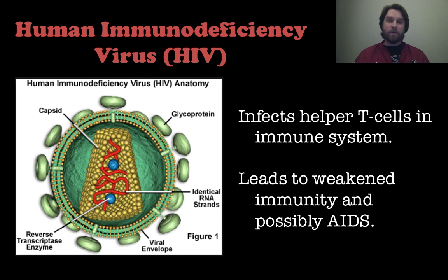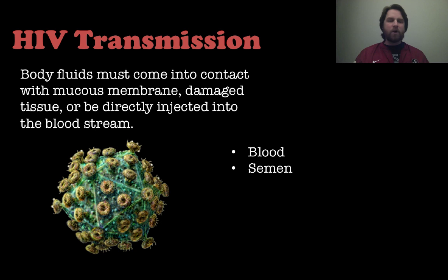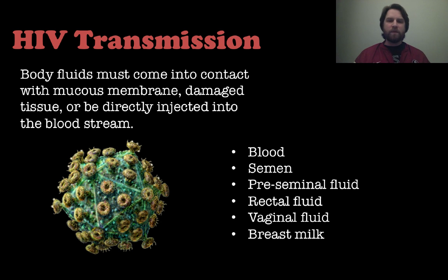A great example of a retrovirus is the human immunodeficiency virus, or HIV. It infects helper T-cells, which are cells of the immune system that usually attack and kill infections. This leads to a weakened immune system, and if your T-cell count gets low enough, you will end up with AIDS — acquired immunodeficiency syndrome. HIV transmits itself through bodily fluids that come into contact with mucous membranes or damaged tissue, or if it's injected directly into the bloodstream. HIV transmission is through blood, semen, pre-seminal fluid, rectal fluid, vaginal fluid, and breast milk — so all of those bodily fluids can transmit HIV.